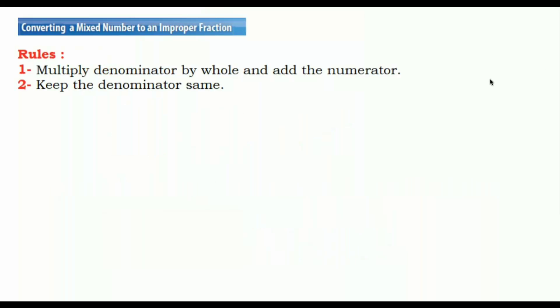In this section we are going to talk about converting a mixed number to an improper fraction. The rule is: first you multiply the denominator by the whole number and add the numerator, then you keep the denominator the same. Let's see an example.